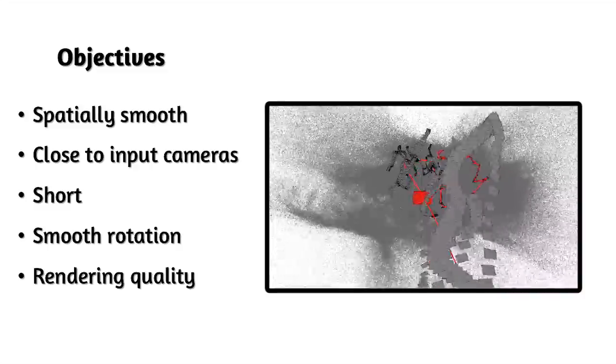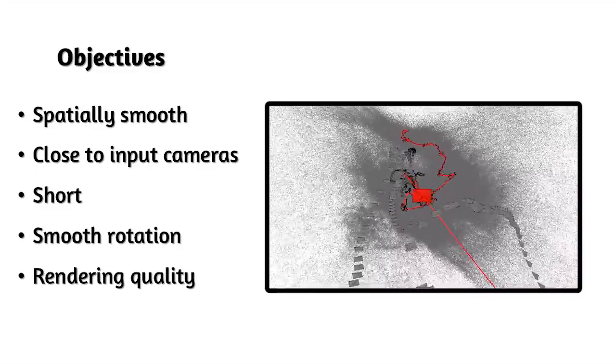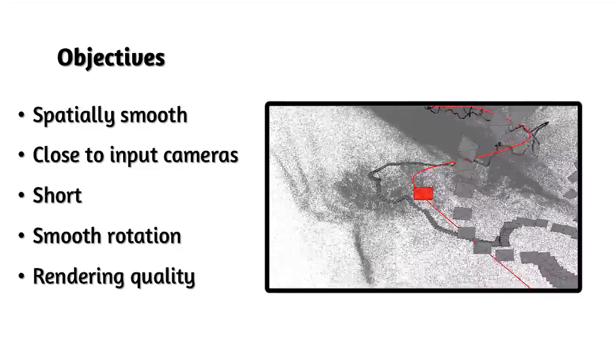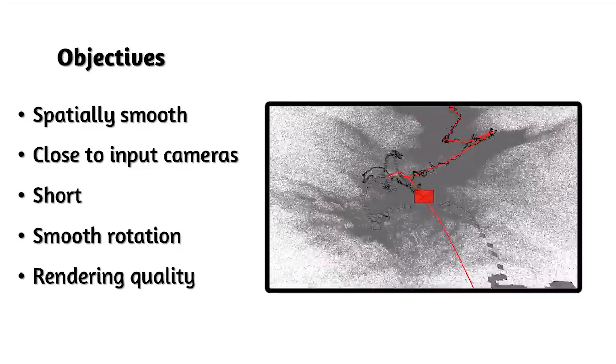It should be smooth and vibration-free, but should not venture too far away from the input camera poses, otherwise the rendering will suffer. We balance these objectives through an optimization process resulting in the smooth path you see here in red.